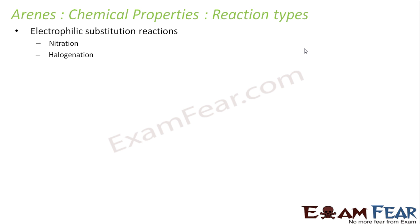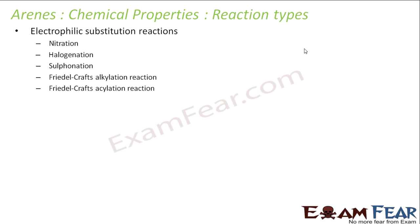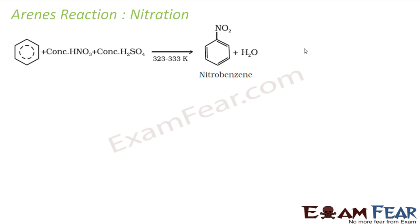Under electrophilic substitution reactions we have nitration, halogenation, sulfonation, Friedel-Crafts alkylation reaction, and Friedel-Crafts acylation reaction, and we also have addition reactions. Let us start with the nitration reaction — a substitution reaction where the nitro group replaces a hydrogen. This happens when you have sulfuric acid and nitric acid, and you will get nitrobenzene.